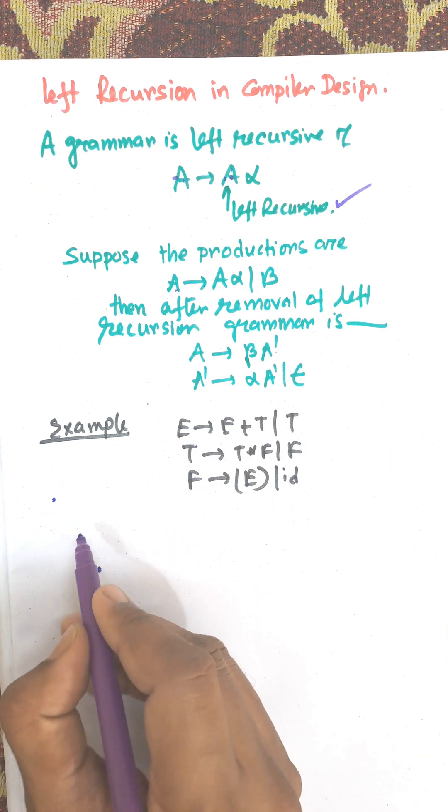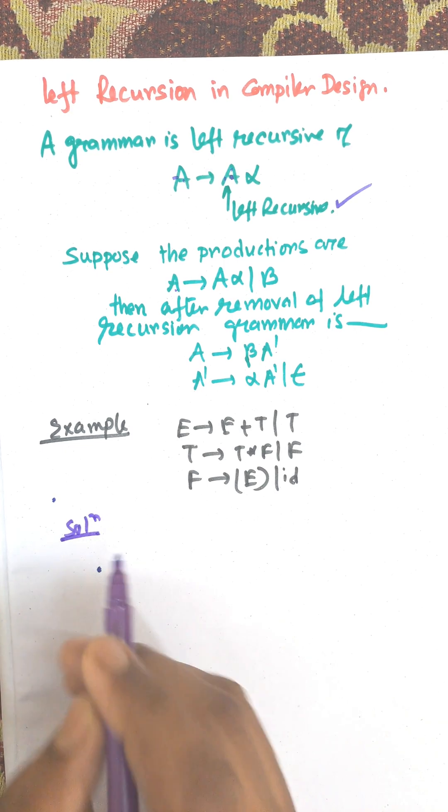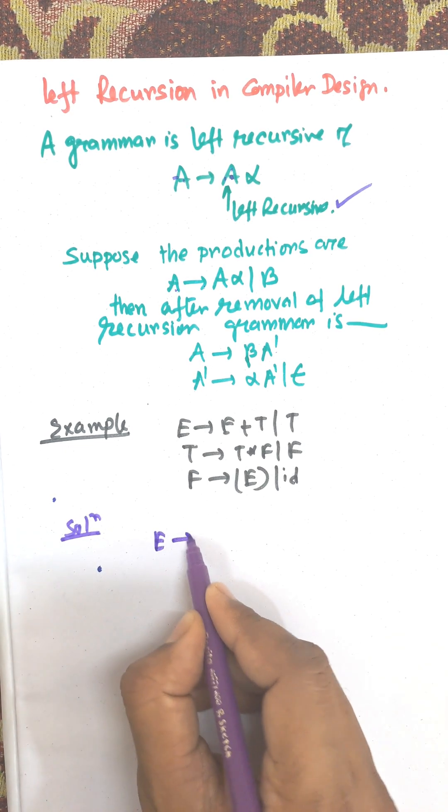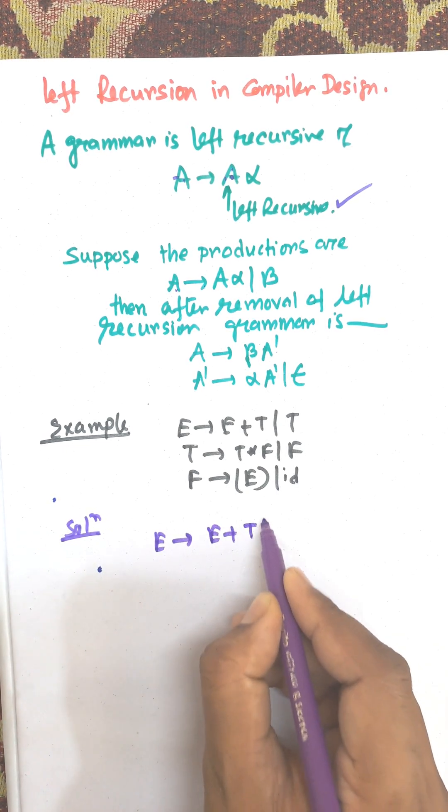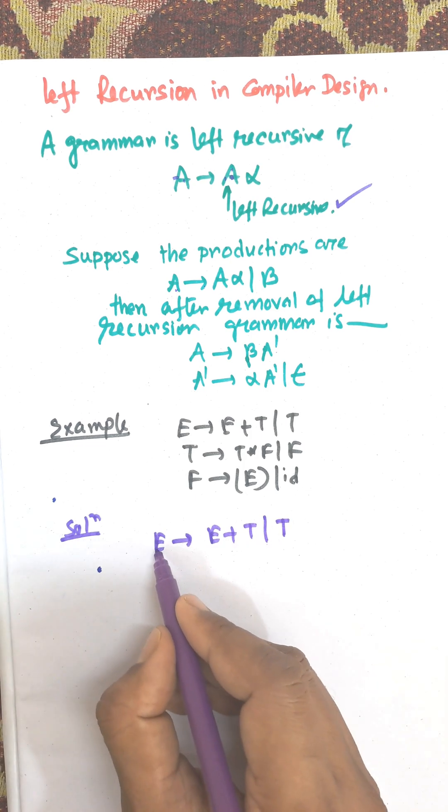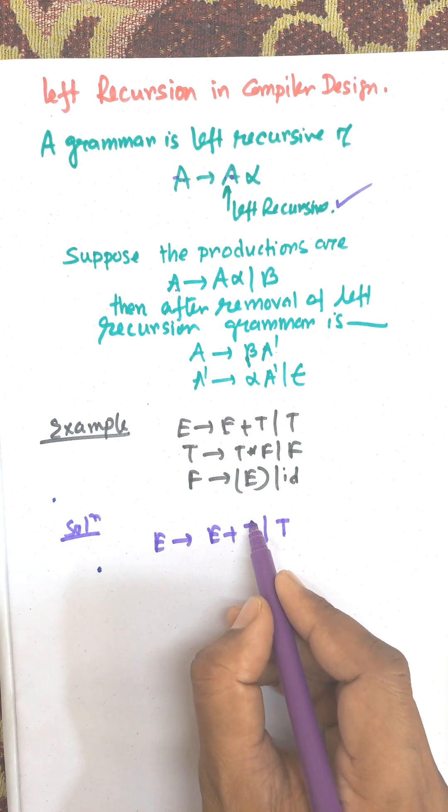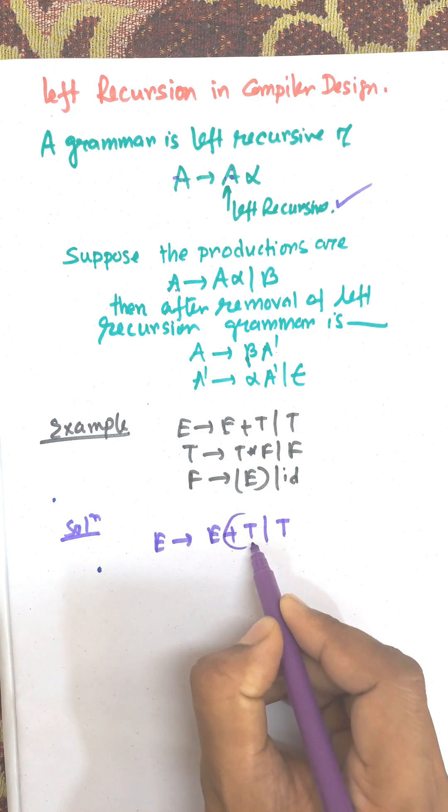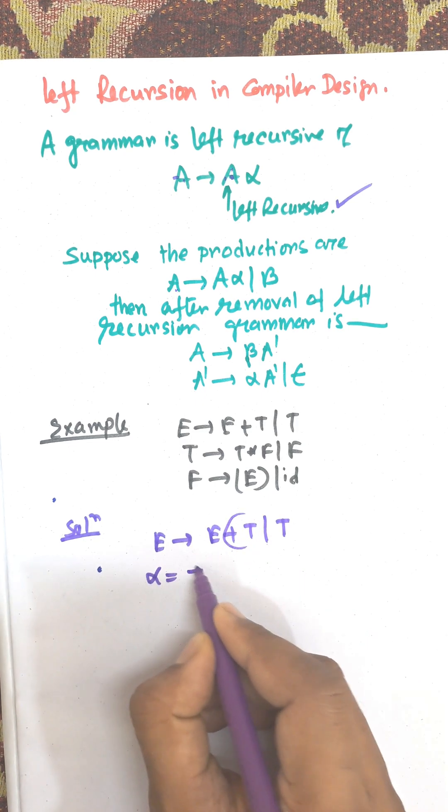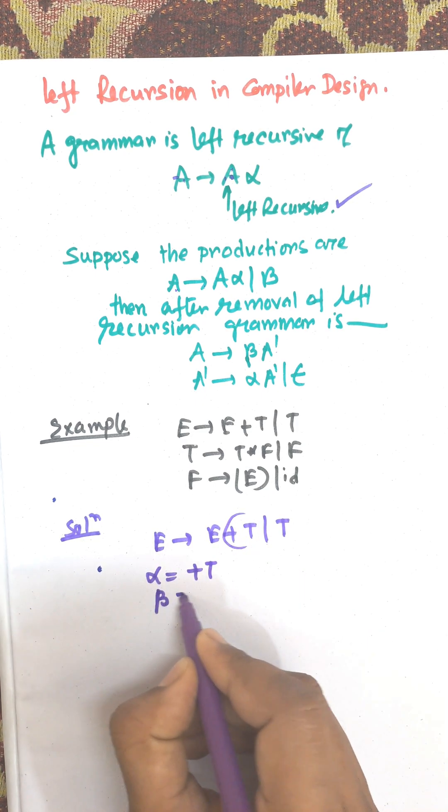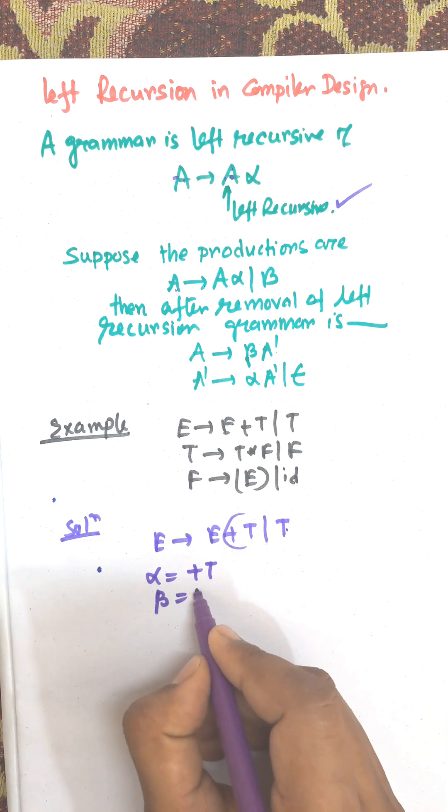So let us consider the example here. First one is E → E+T | T. This one is common, that is A and this one is A. So this part is known as alpha. So this part, alpha is +T, and beta is T.